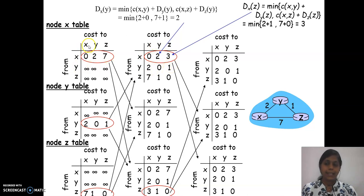Next, y to y is 0, and y to z is 1. This is added here. Like this, y information after receiving this table is updated. Similarly, z information after receiving this table is updated.